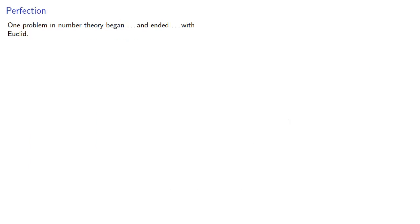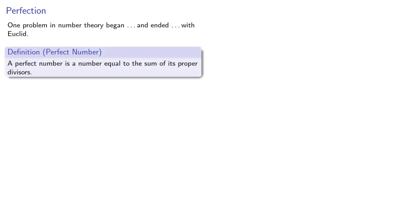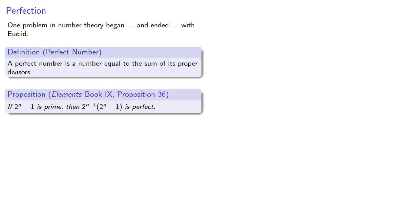One problem in number theory began, and to some extent ended, with Euclid. Remember that Euclid defined a perfect number to be a number equal to the sum of its proper divisors. In the last proposition of Book 9, Euclid proved that if 2^n - 1 is prime, then 2^(n-1) times (2^n - 1) is perfect. This gives us a way to generate perfect numbers.